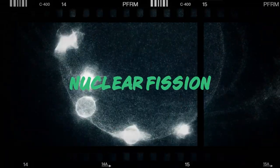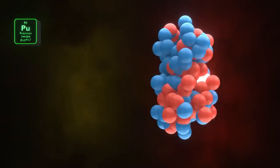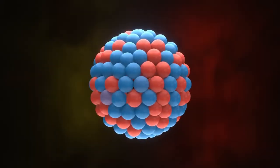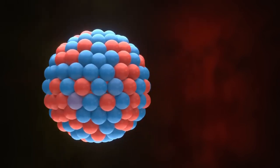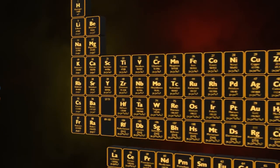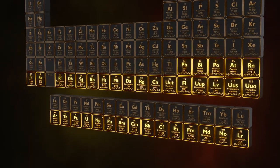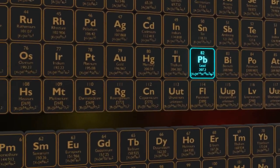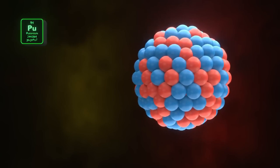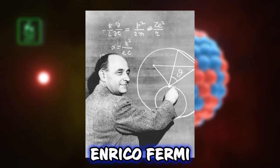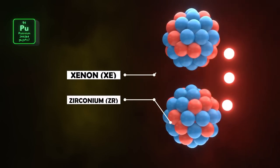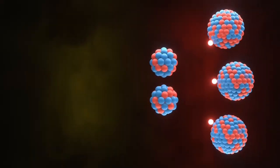Nuclear fission: delving into the forces that govern atomic nuclei unveils the phenomenon of nuclear fission, a pivotal aspect in the genesis of nuclear bombs. This process involves the deliberate splitting of an atom's nucleus into smaller fragments through the introduction of a neutron, unleashing substantial heat energy and radiation. The credit for unraveling the secrets of nuclear fission goes to Italian physicist Enrico Fermi, who in the 1930s showcased that elements subjected to neutron bombardment could undergo transformative changes.